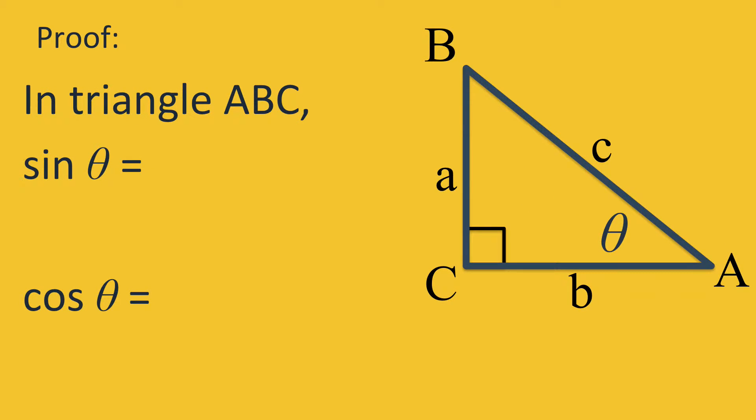In triangle ABC, sine theta equals the opposite side over the hypotenuse, and cosine equals adjacent side over the hypotenuse. This means that sine theta equals A over C, and cosine theta equals B over C.